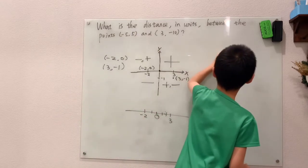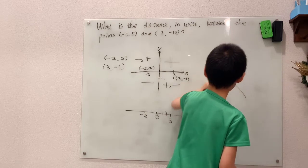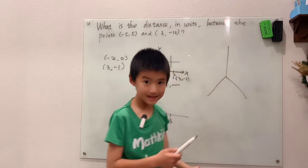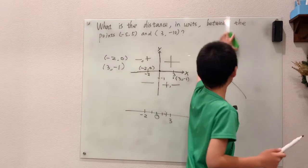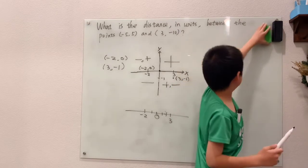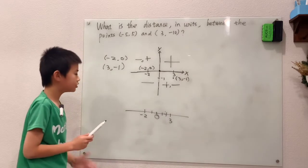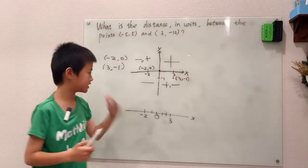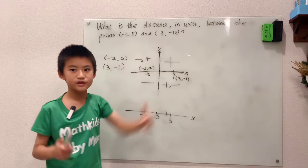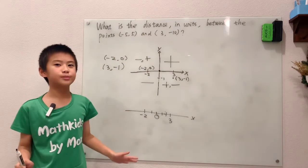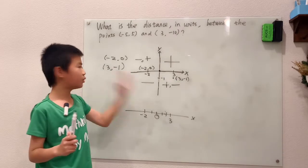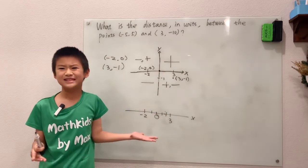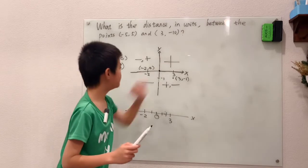There are even 3D coordinate planes that look like this, where you have an x-axis, a y-axis, and even a z-axis. It's a little complicated, but you'll learn that later. So this is the x-axis, this is the y-axis, and the 3D model just adds a z-axis. Anyway, let's move on from this introduction to the real problem.